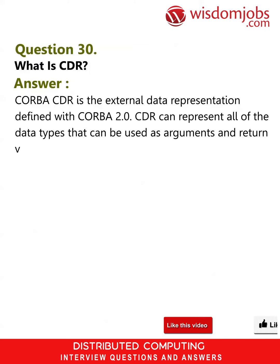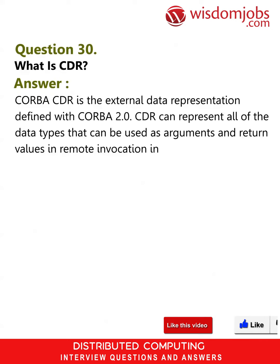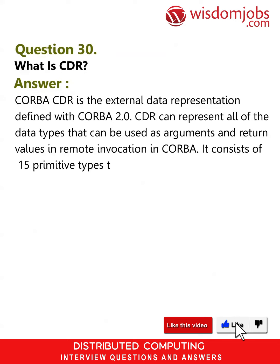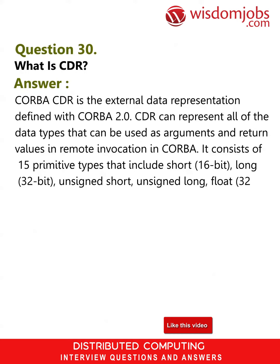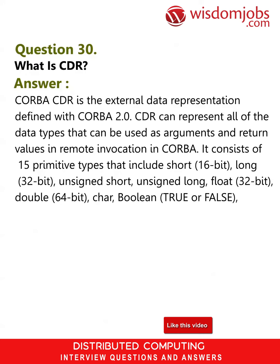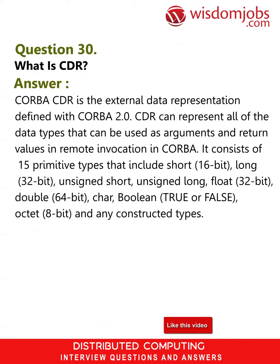These data items can be used as arguments and return values in remote invocation. In CORBA, it consists of 15 primitive types that include: short (16-bit), long (32-bit), unsigned short, unsigned long, float (32-bit), double (64-bit), char, boolean (true or false), octet (8-bit), and any constructed types.